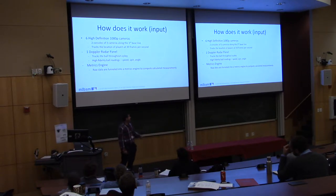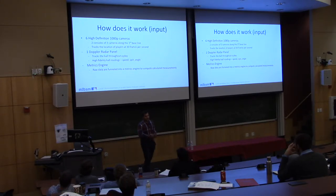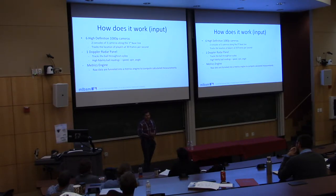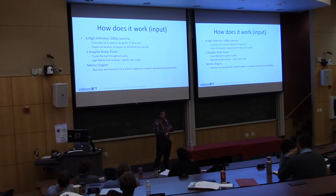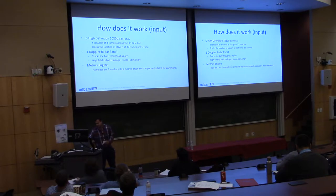We also have a metrics engine. We take the raw data from the ballpark, funnel it into this metrics engine, and output more metrics and measurements such as sprint speed, home to first time — not just raw XY values, but something that happened on the play — arm strength for outfielders, stolen base time, all that stuff. I'll get into some more context behind that too.